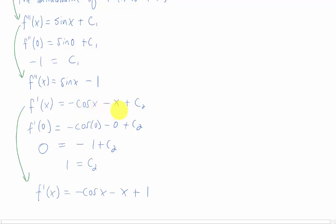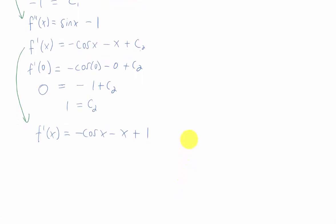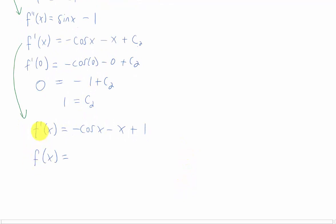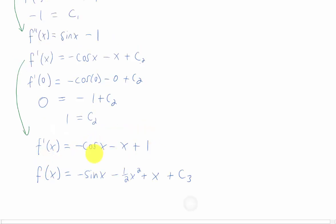So let's write down our new version of f prime of x. I just plugged in c2 equals 1 right here, but we want to find f of x, which means one more antiderivative. The antiderivative of f prime is just f, and we're looking for a function whose derivative is all of this stuff. And taking the antiderivative of each one of these three terms should give us this result.